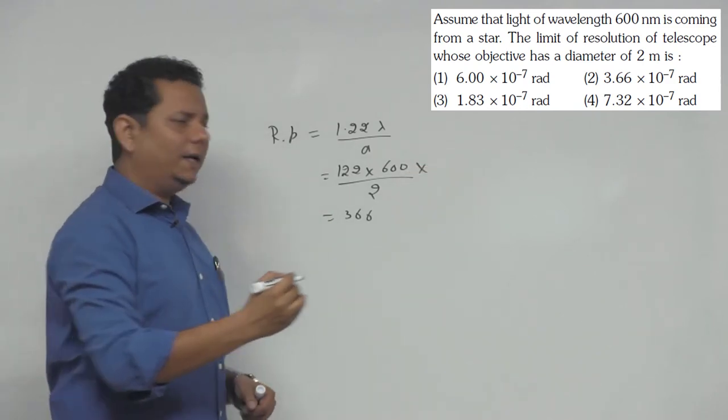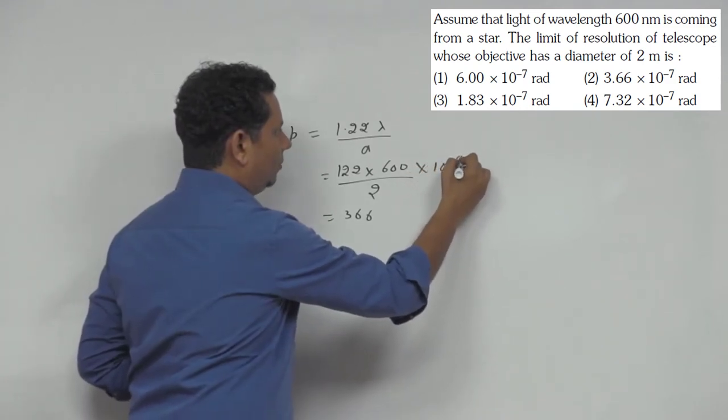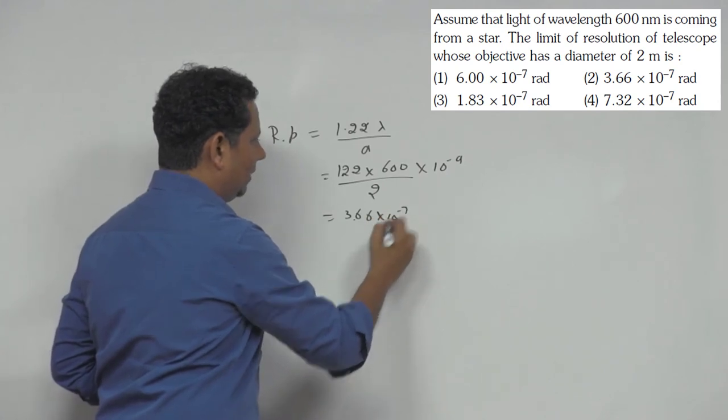Here, lambda is 600 nanometer. So with 10 to the power minus 9, this becomes 3.66 into 10 to the power minus 7.